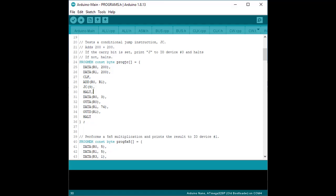The first program that we will be running is called prog jc. It is a test program to make sure the conditional jump circuitry works properly. We start by adding two numbers that are large enough to result in an overflow. This will set the carry flag.